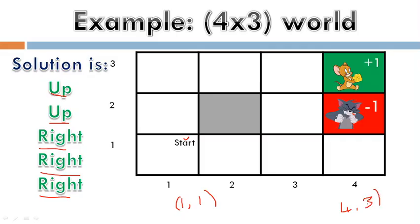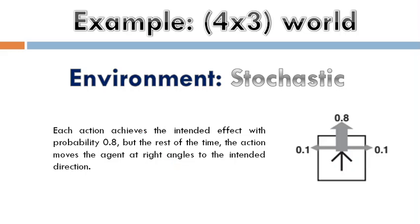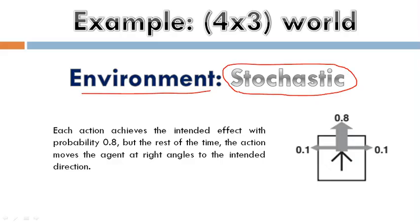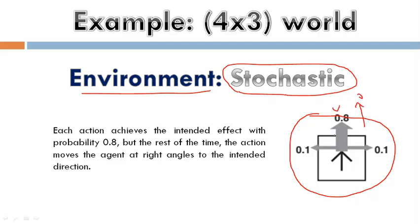Now consider a stochastic environment — the opposite of deterministic. In a stochastic environment, we do not fully know the environment. Each action has associated probabilities: moving up has a probability of 0.8, and moving left or right has a probability of 0.1 each.